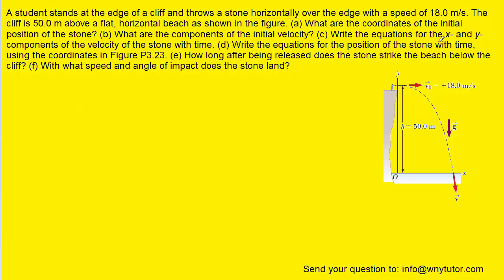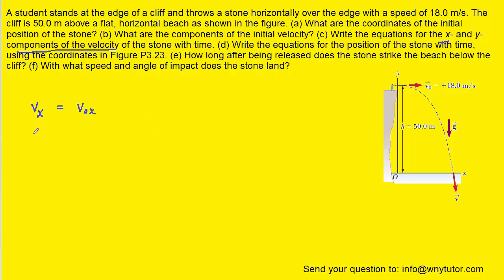For part C, in order to write the X component of the velocity, we consider the following equation from kinematics. In the X direction, the acceleration is equal to 0 meters per second squared, which is always true for basic projectile motion. Since the acceleration term in X is 0, that eliminates the entire acceleration term from the equation. The initial velocity in the X direction was positive 18 meters per second, so the correct answer to part C for the X component is Vx = 18 m/s.